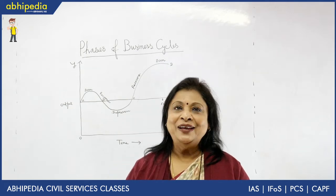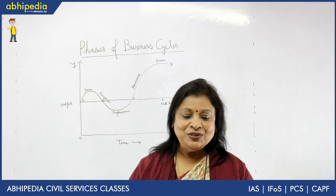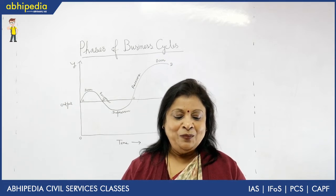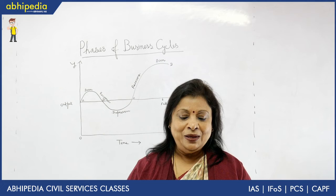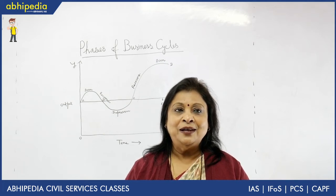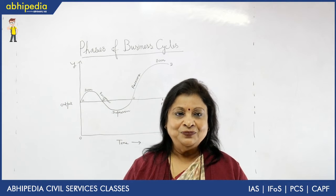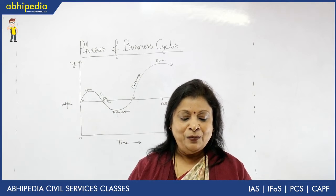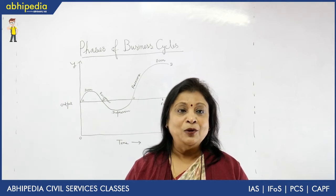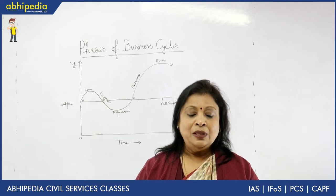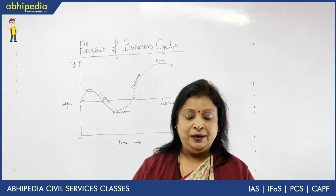Business cycles are fluctuations in economic activities that an economy experiences over a period of time. The business cycle is characterized by expansion and contraction. Expansion means the economy experiences economic growth, and contraction means a period of economic decline.